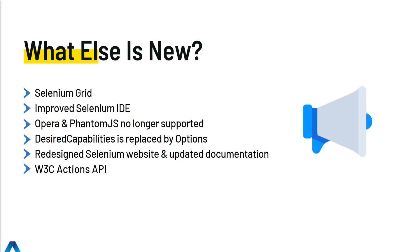Now let's discuss what else is new in Selenium 4. Selenium Grid is going from version 2 to version 4. A node can now run sessions in a Docker container, it supports IPv6 addresses, users can communicate with the grid using HTTPS, and the GUI has been remodeled. The Selenium IDE has also been improved greatly. Opera and PhantomJS are no longer supported. DesiredCapabilities is being replaced by Options. The Selenium website has been redesigned and documentation updated. Lastly, Selenium has adopted the W3C Actions API.